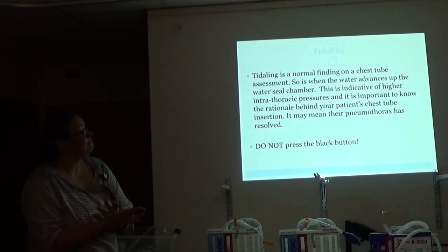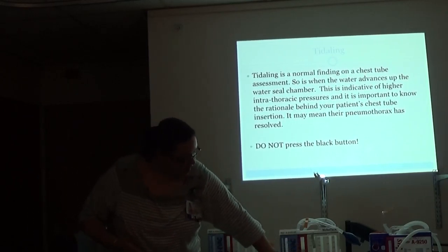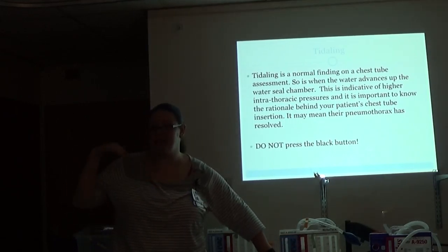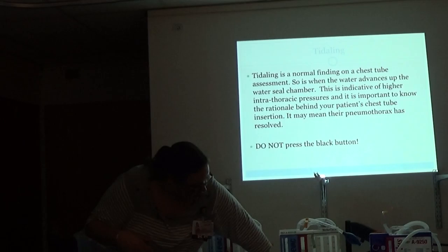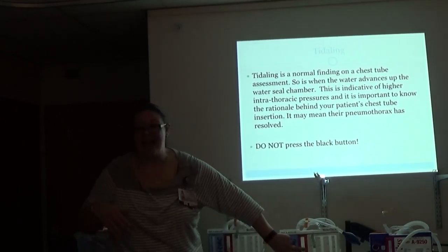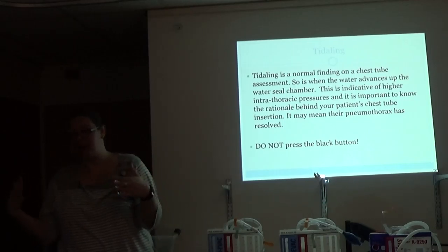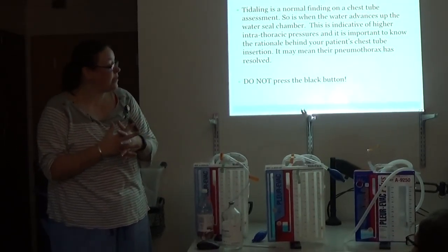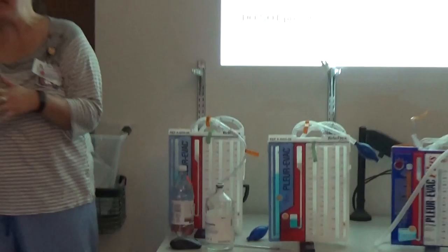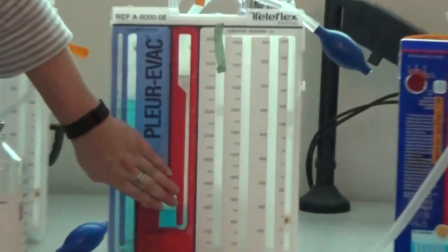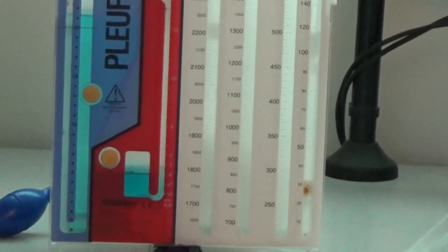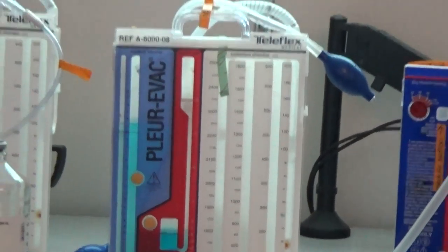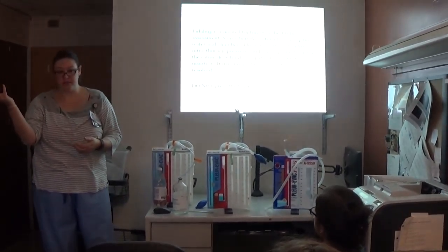Titling is a normal finding in your chest tube. So is when the water advances up this water seal chamber. So again, your water seal chamber is your window into the thorax, so it's telling you what's happening actually in your chest cavity. They're a little bit lazy, so down here is actually positive, and all the way up is negative. Your lungs have to be at negative pressure inside your thoracic cavity in order for them to fully expand. So physiologic norm is about minus 6 to minus 13 inside the chest cavity. So you'll see this increase and decrease. So as the diaphragm draws down to inhale, it increases negative pressure, bringing your air in. As the diaphragm relaxes, it allows your lungs to expire the air.